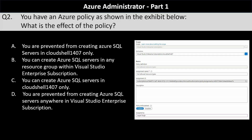Let's read the policy from top to bottom. Scope defines which level the policy is applied at, and in this case it is applied at subscription level — the Visual Studio Enterprise Subscription. The exclusion section shows Cloud Shell 1407 is exempted, so everything under the subscription must adhere to this policy except the Cloud Shell 1407 resource group. The policy definition states that certain resource types are not allowed to be created, and the parameter specifies that the disallowed resource type is Microsoft SQL Server. In summary, you cannot create SQL Servers in the subscription except in Cloud Shell 1407 — meaning you can create SQL Servers in Cloud Shell 1407 only, which is option C.